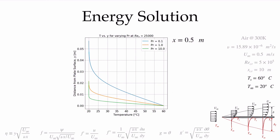For the same problem with plate surface temperature 60°C and T_infinity = 20°C at x = 0.5 m, temperature profiles for Prandtl numbers 0.1, 1, and 10 are plotted. All go from 60°C at the wall to 20°C in the free stream. At Pr = 0.1, this occurs much further from the plate; at Pr = 1, the thermal and momentum boundary layers are the same size; at Pr = 10, the thermal boundary layer is thinner.